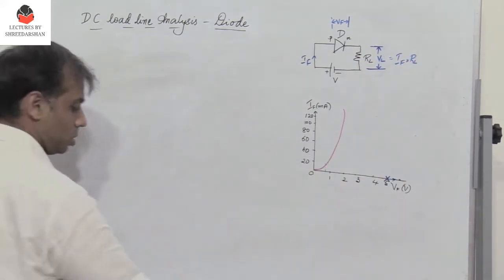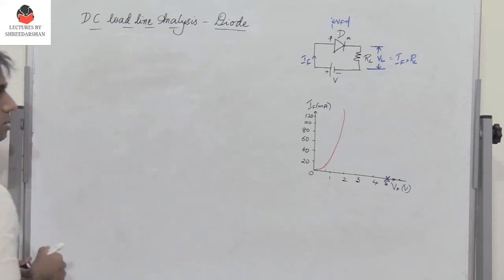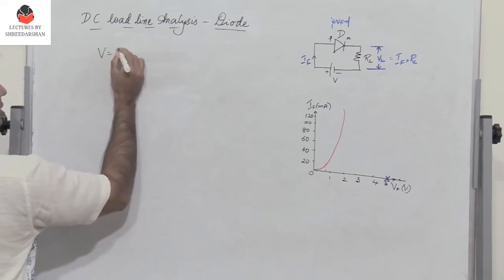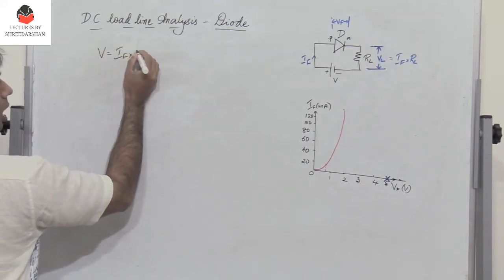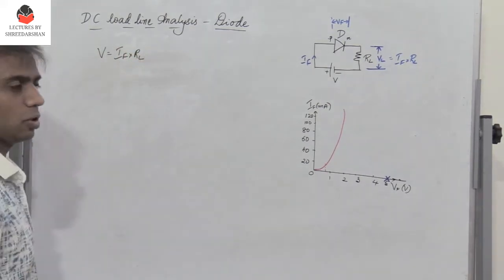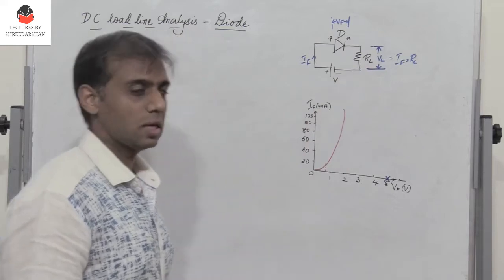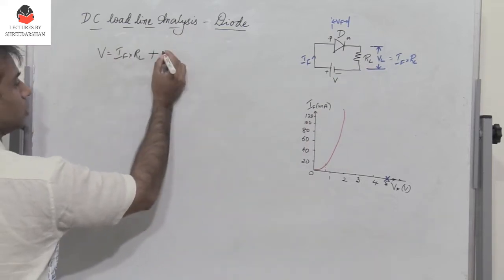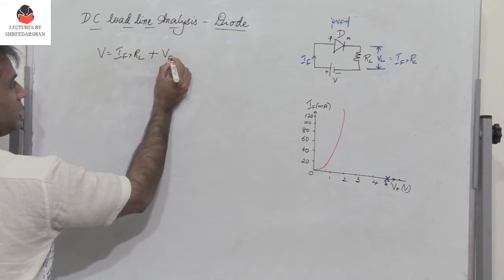Now let us write the KVL for this circuit. The total voltage V equals IF into RL, which is the drop across the load resistance RL, plus the voltage across the diode D which is VF.